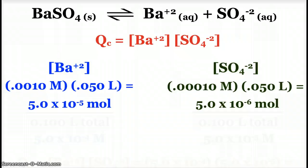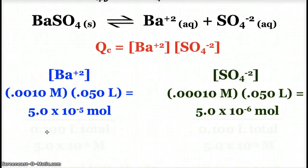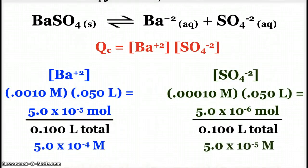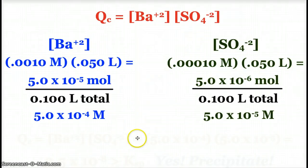We're mixing the two solutions together, though, so 50 mils and 50 mils gives us 100 milliliters total, 0.1 liters. Now I have my concentrations. Now I can plug into the Q expression and decide whether or not a precipitate will form.